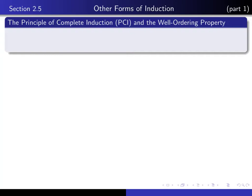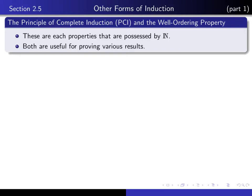This is the first of a series of lectures on section 2.5, entitled Other Forms of Induction. In this lecture we introduce the principle of complete induction and the well-ordering property of the natural numbers. Just as for the principle of mathematical induction, these are both properties possessed by the natural numbers, and both are useful for proving various results about the natural numbers.